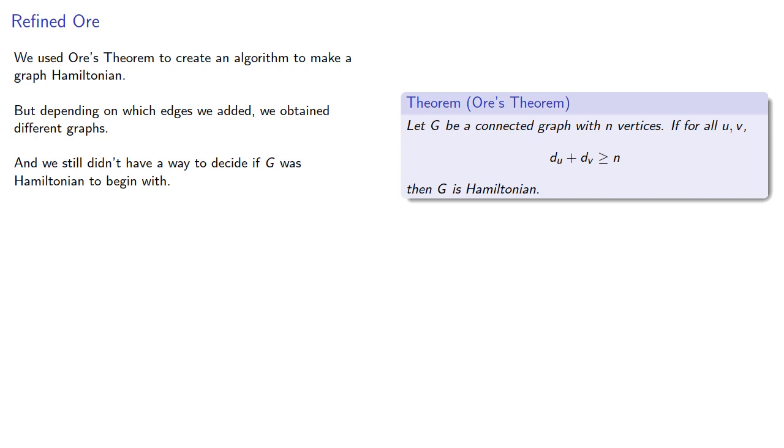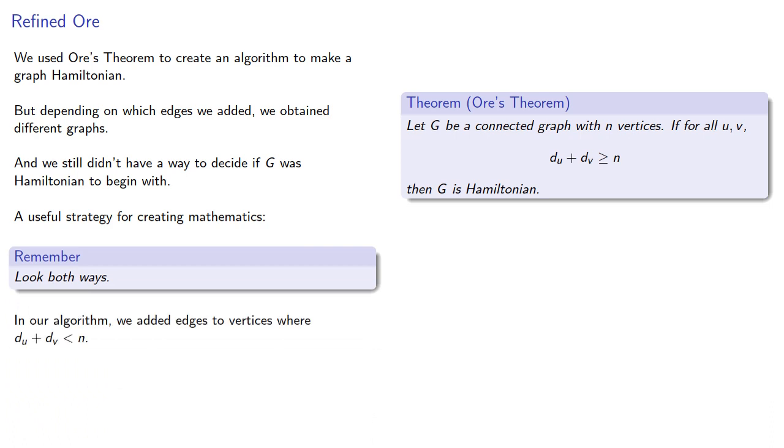So a useful strategy for creating mathematics and crossing the street: look both ways. In our algorithm, we added edges to vertices where the degree sum was less than n. What if we added edges to vertices where the degree sum was at least n?